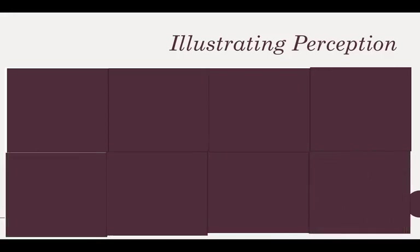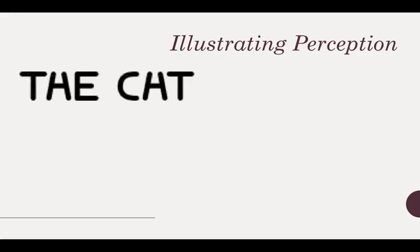You've seen these already, so let's look at some more. Hopefully all of you read that, and hopefully all of you read 'the cat.' What's very interesting is that the central letter in both of these images is exactly the same — the stimulus you are receiving is exactly the same. But you are perceiving or labeling that stimulus as an H in one case and an A in the other. The way we perceive the same stimulus differs depending on context.